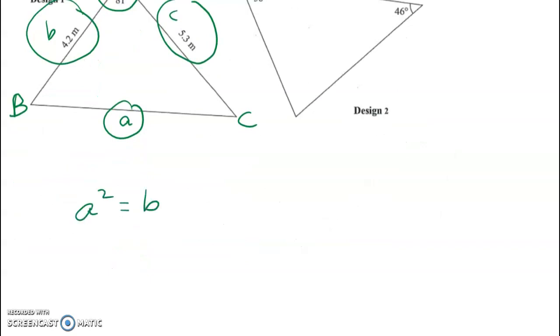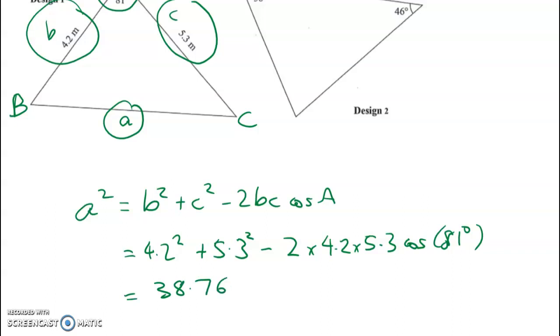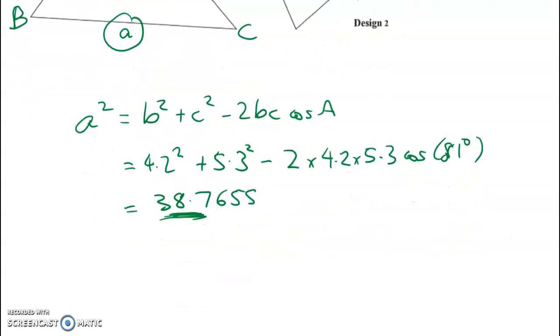So a squared equals b squared plus c squared minus 2bc cos A, which is 4.2 squared plus 5.3 squared minus 2 times all of this. I'm going to work in degrees until I hit the curved stuff. Cosine of 81 degrees - a squared is 38.7655. I haven't rounded that too hard; I'm going to stick to probably around four decimal places on the way through.